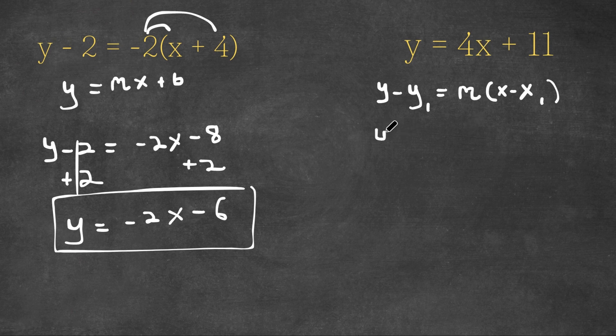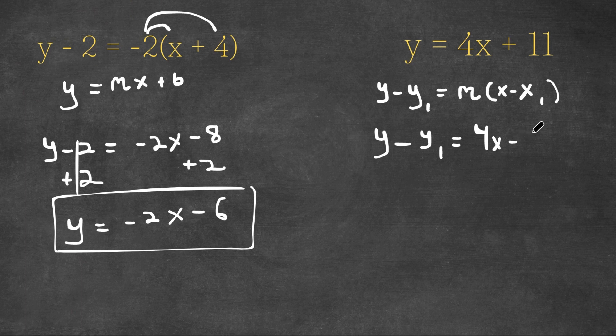So let's write this as y minus y sub 1 is equal to, now our slope is 4, so 4x minus 4 times x sub 1. Now we could write any possibility for x sub 1 and y sub 1, as long as 4 times x sub 1 plus y sub 1 is equal to 11.